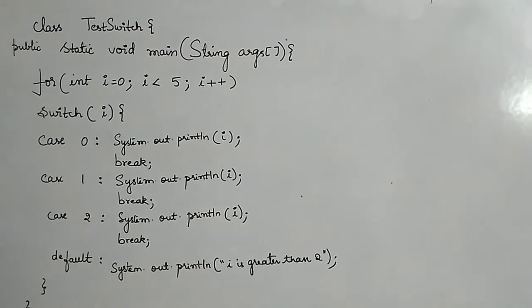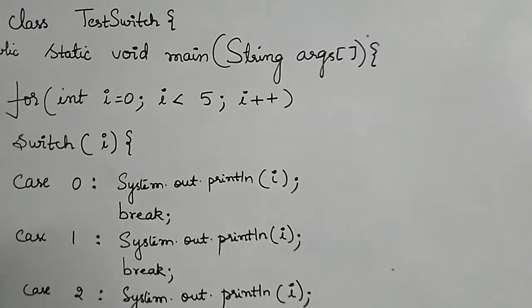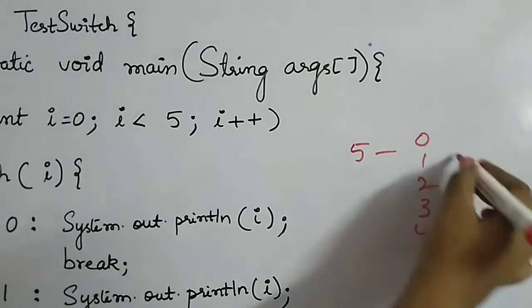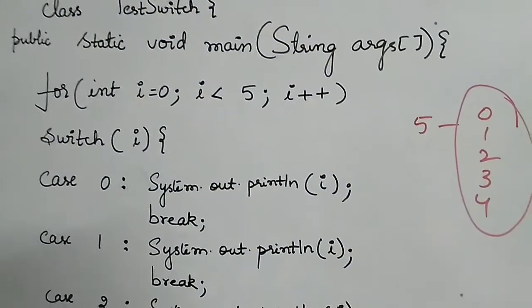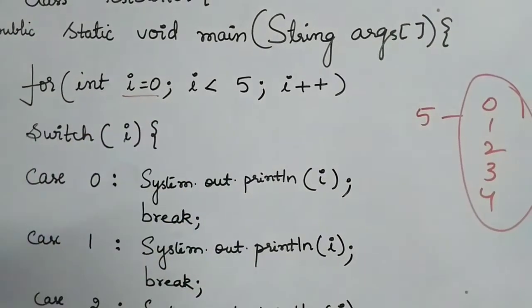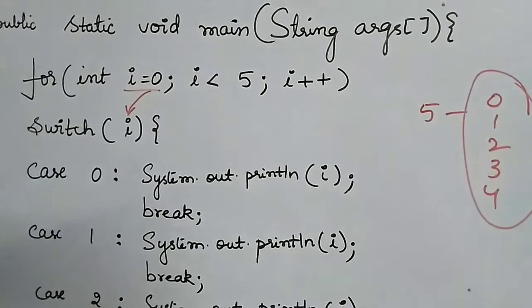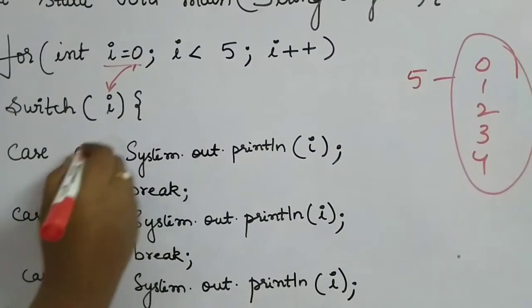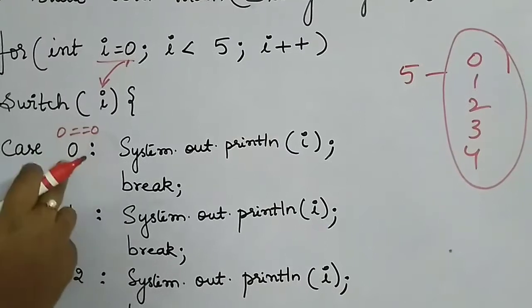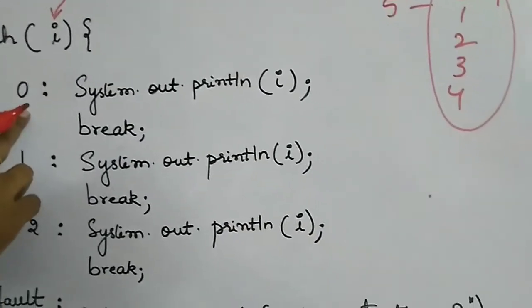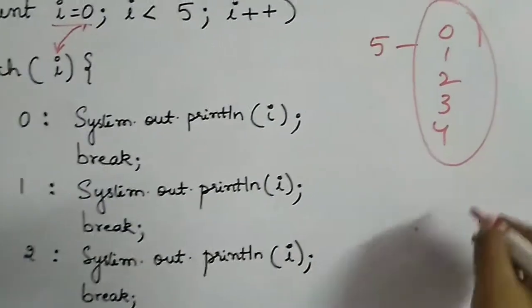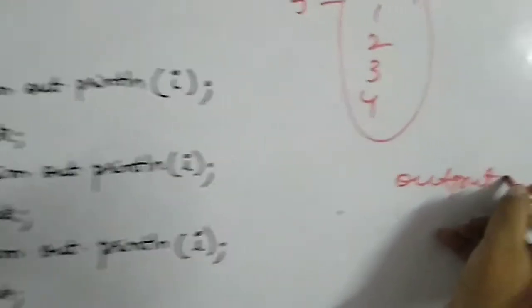Let's look at a code example. A for loop iterates five times, for i values zero through four. For each iteration, i is passed as the expression to the switch. When i equals zero, it matches case zero, and the value of i — which is zero — is printed. A break then exits the switch.